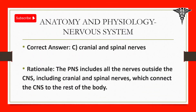Correct answer: C. Cranial and spinal nerves. Rationale: The PNS includes all the nerves outside the CNS, including cranial and spinal nerves, which connect the CNS to the rest of the body.